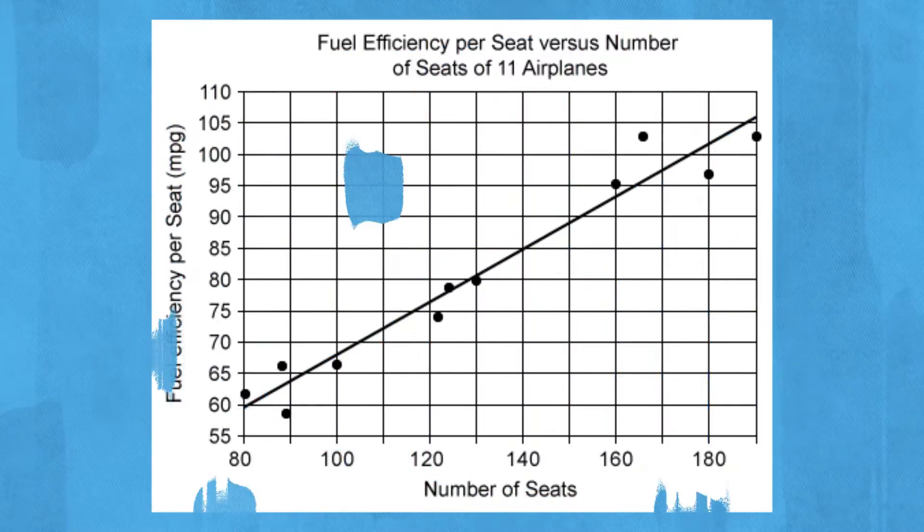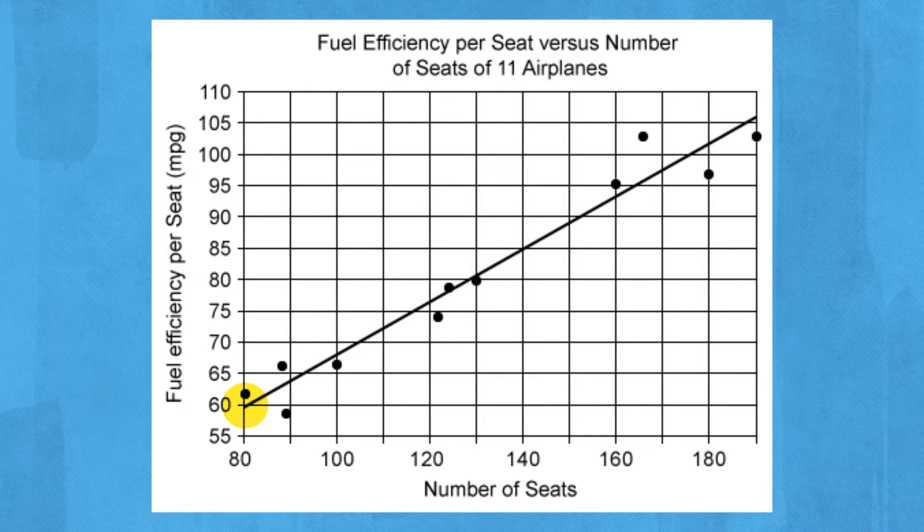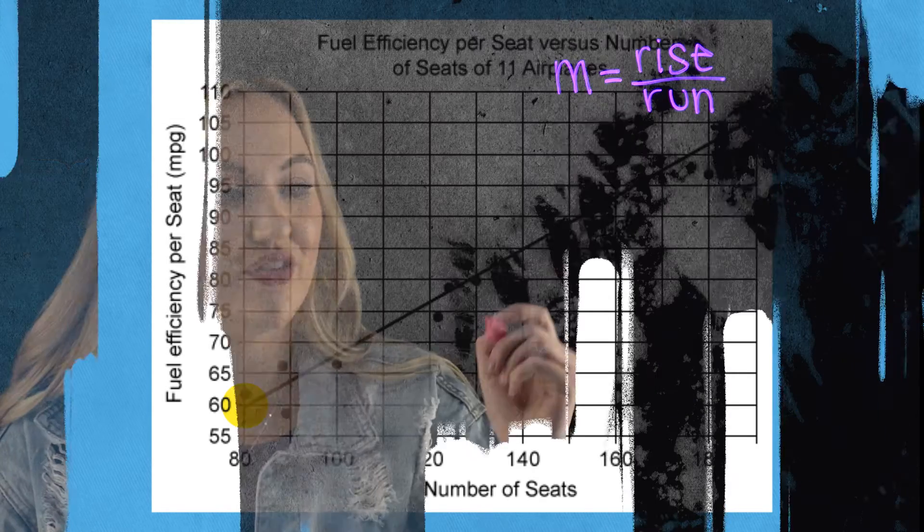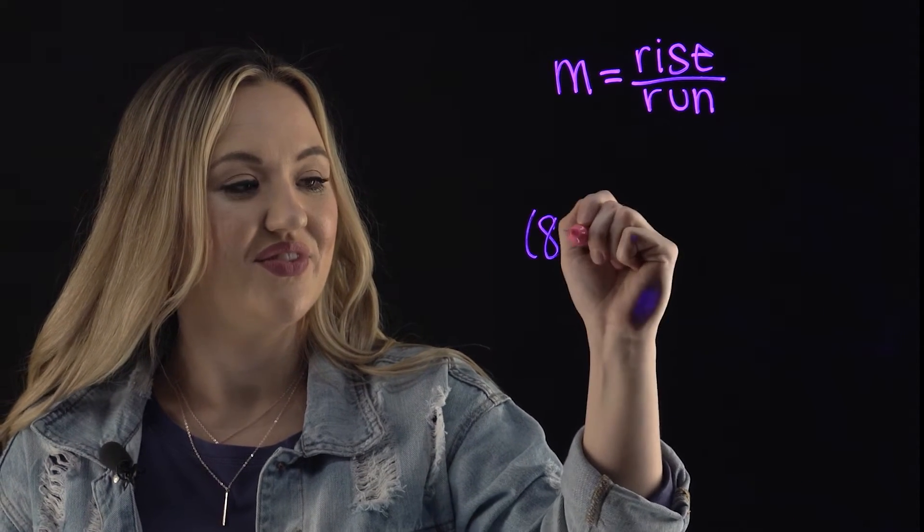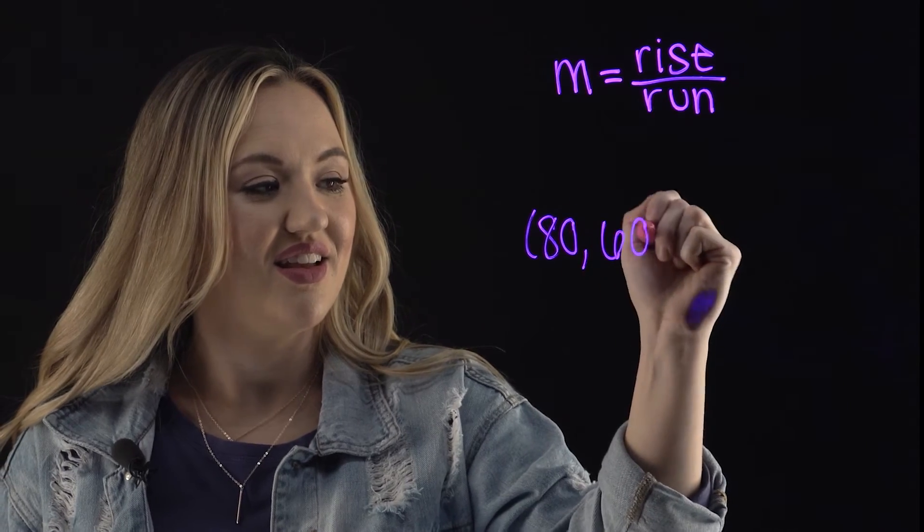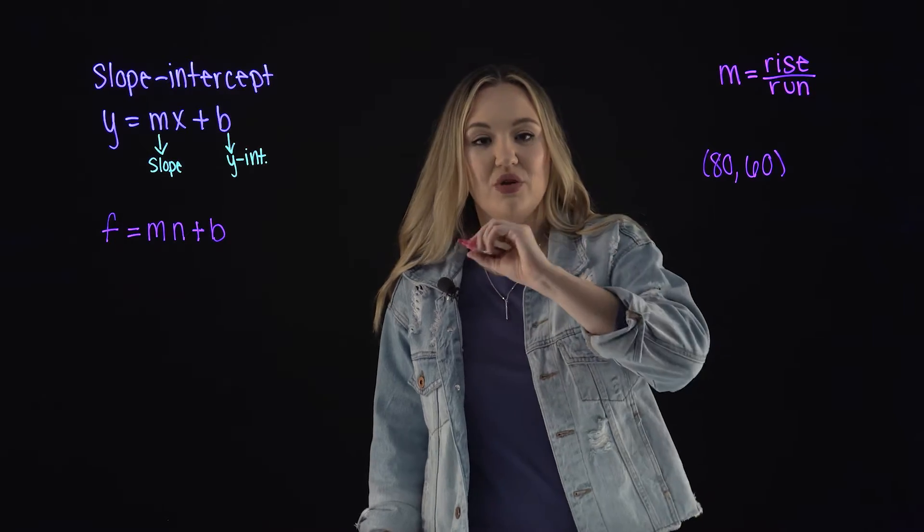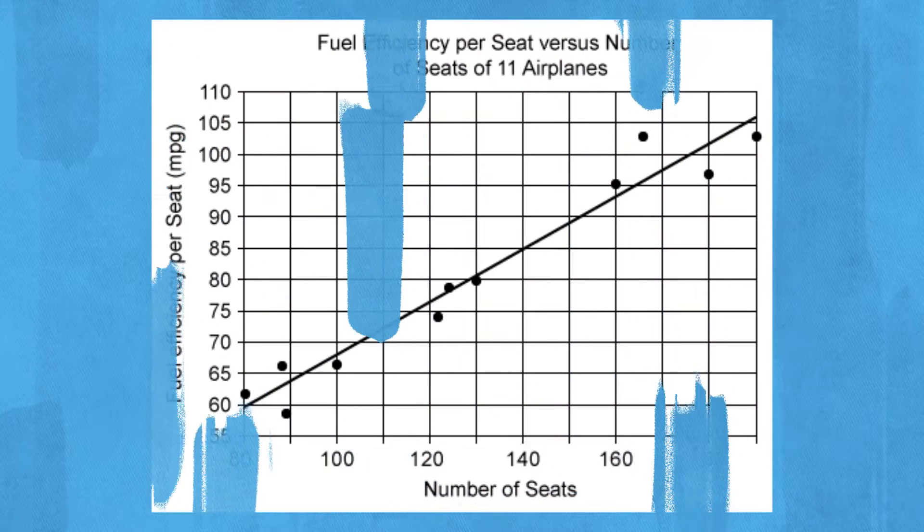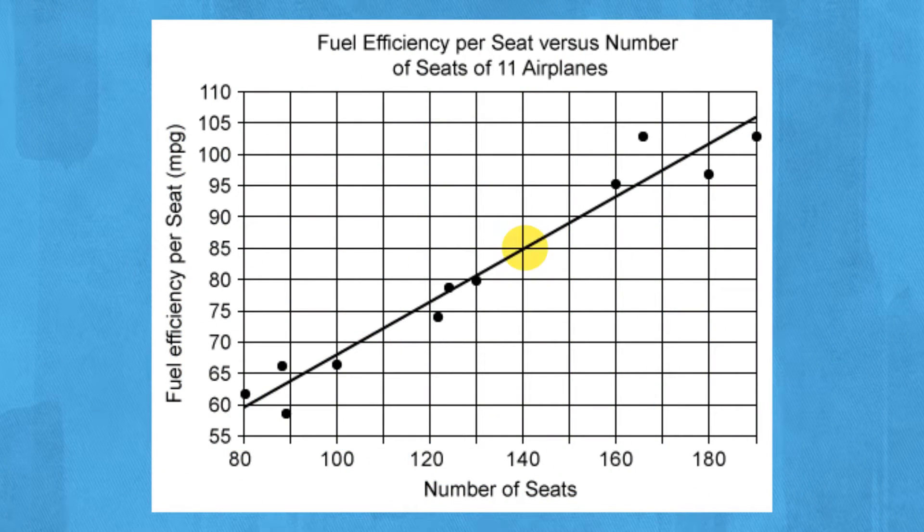On our graph, we're going to identify two points that are on the line of best fit that are near where two grid lines cross. So at the very start of this line of best fit, there's the point (80, 60). That's one of our points. And then moving up, another point on the line that occurs where two grid lines cross is (140, 85).